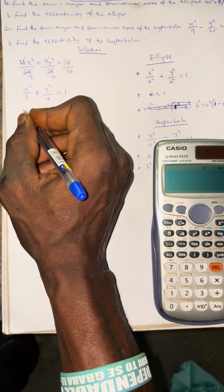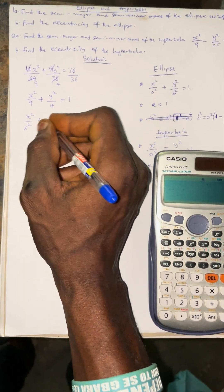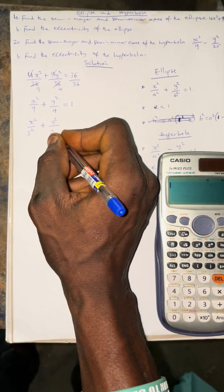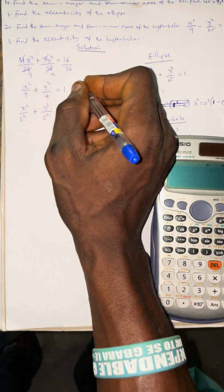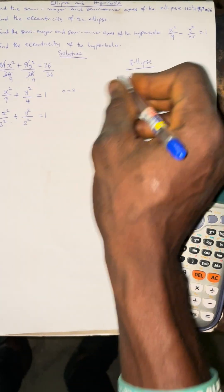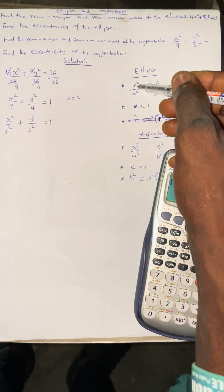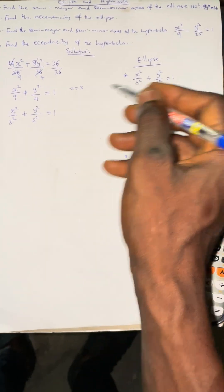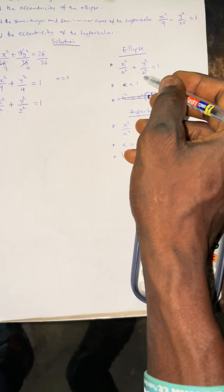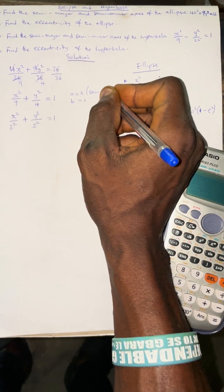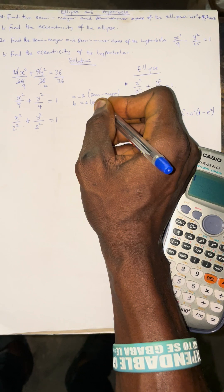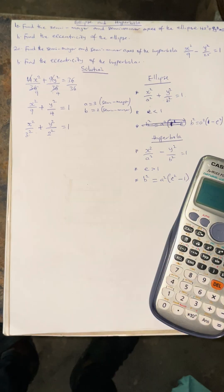We can rewrite this as x² over 3² plus y² over 2² equals 1. Comparing with the standard ellipse equation, we see that a equals 3 and b equals 2. Therefore, the semi-major axis is 3 and the semi-minor axis is 2. That is how to find the semi-major and semi-minor — it's quite simple.